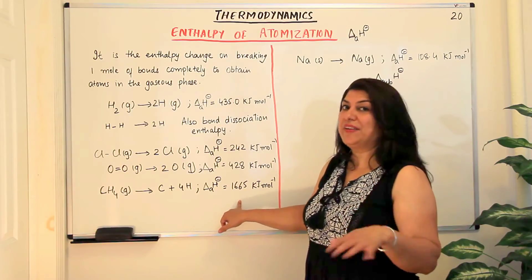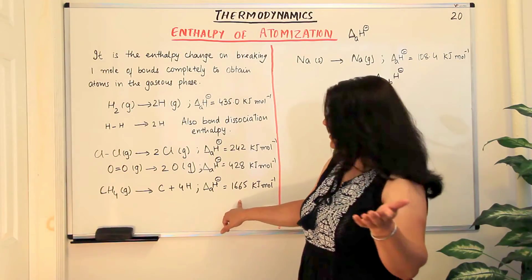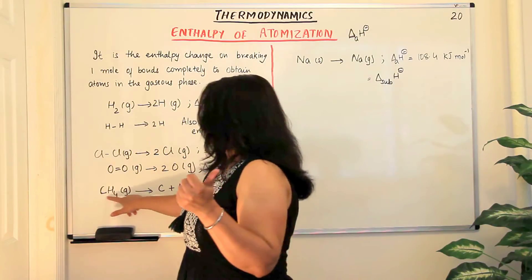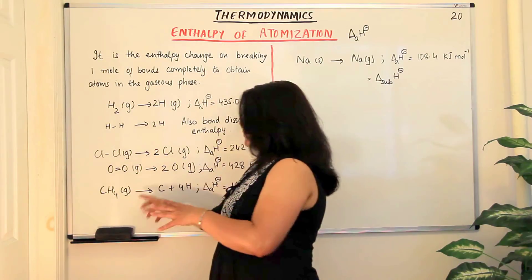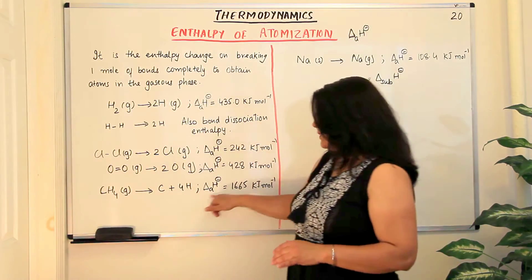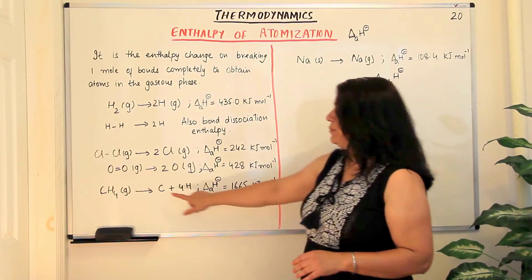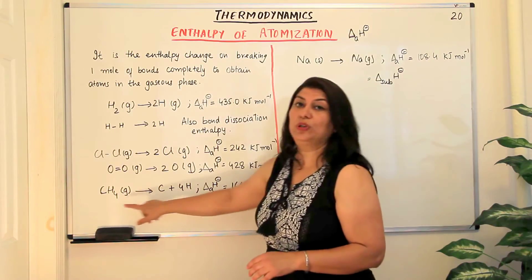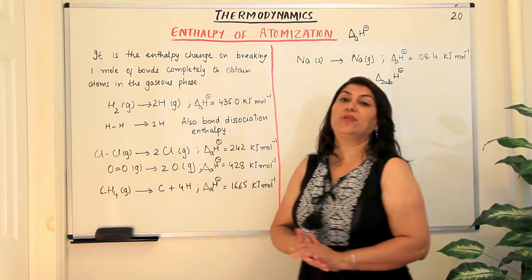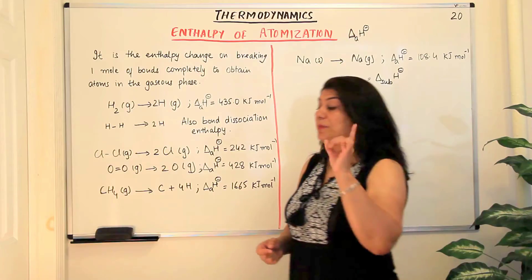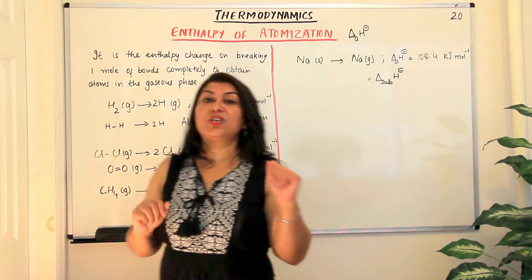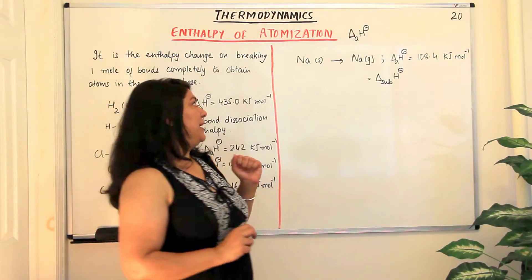But this is not the bond dissociation enthalpy, and this I will explain in the next video — I would encourage you to watch part 21. So methane breaks down and the amount of energy involved in breaking all the bonds to give you one carbon and four hydrogen atoms is the enthalpy of atomization of methane.